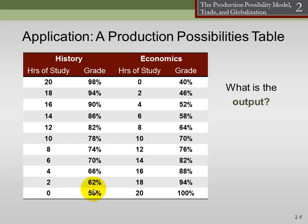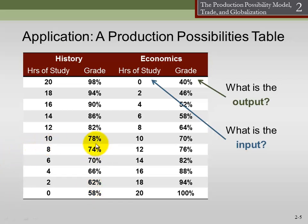Our output in this case is the grade we earn, and our input is the time we spend studying. We see there's a tradeoff between producing either a history grade or an economics grade. What if we spend 10 hours studying history? We get a C. And 10 hours studying economics? We also get a C. That might be the best we can do. This just tells us the possibilities and how much we have to give up to do one or the other.